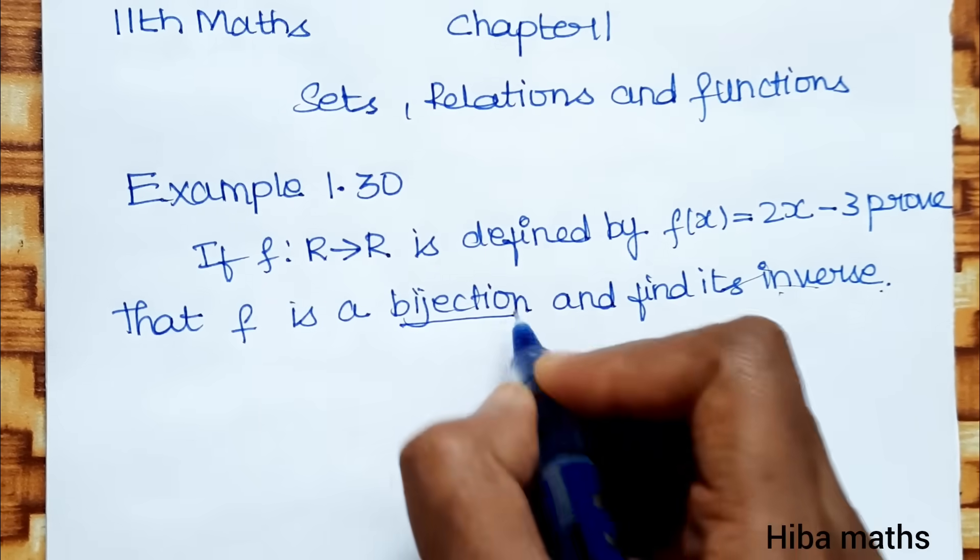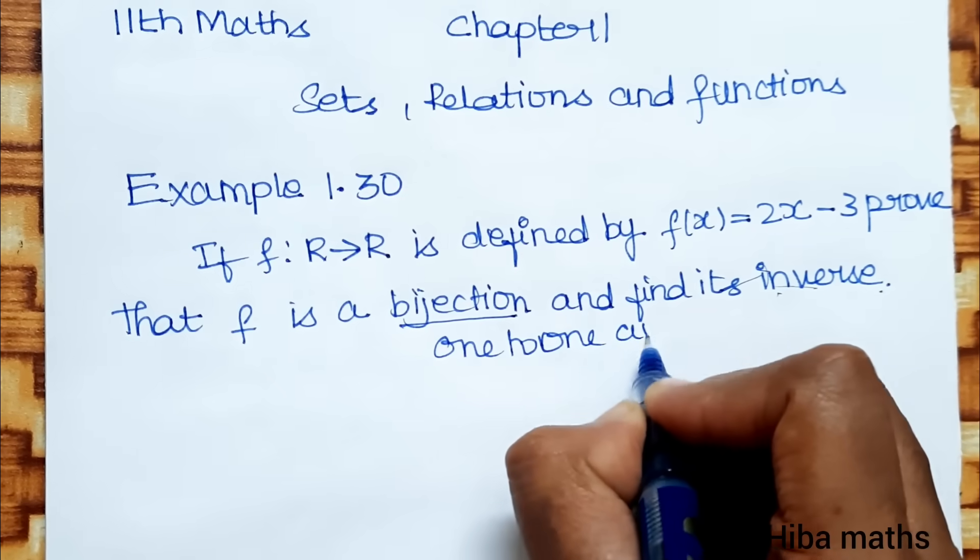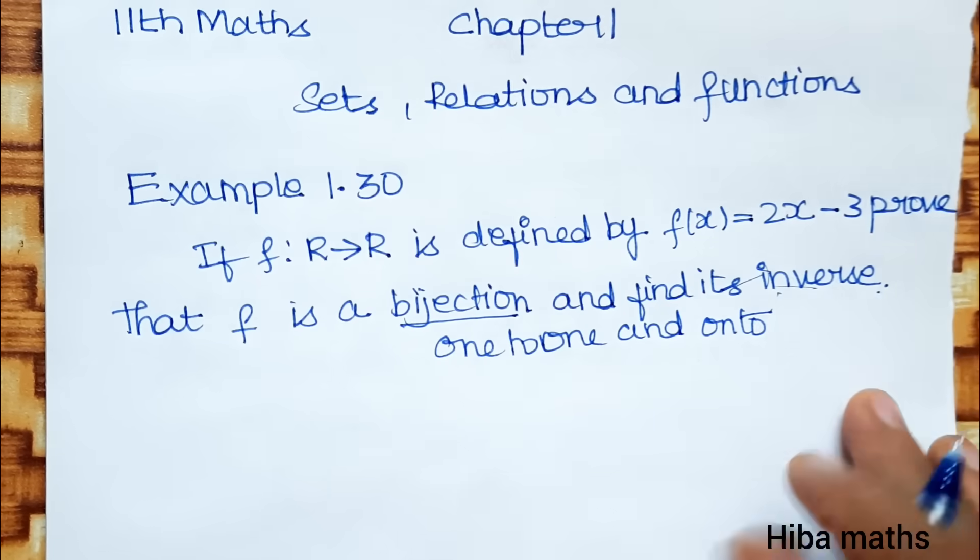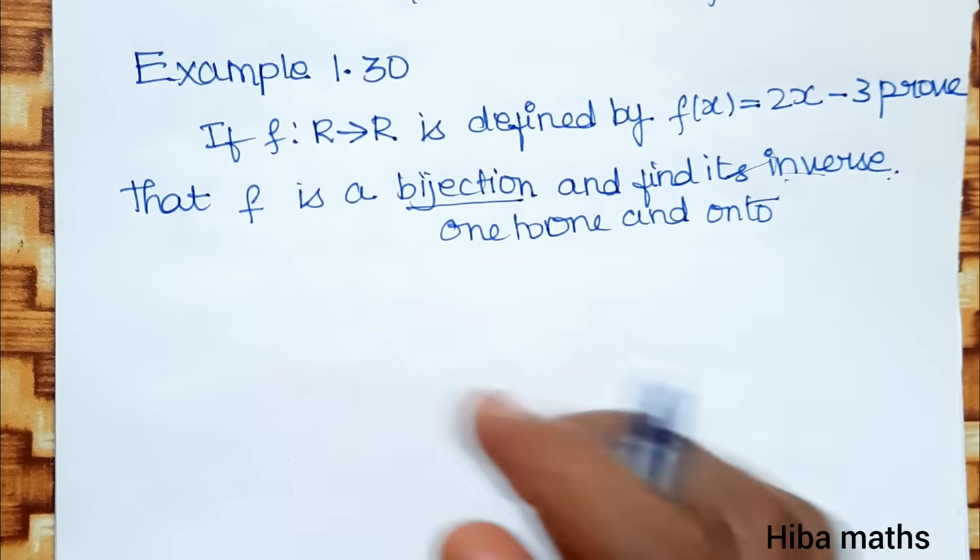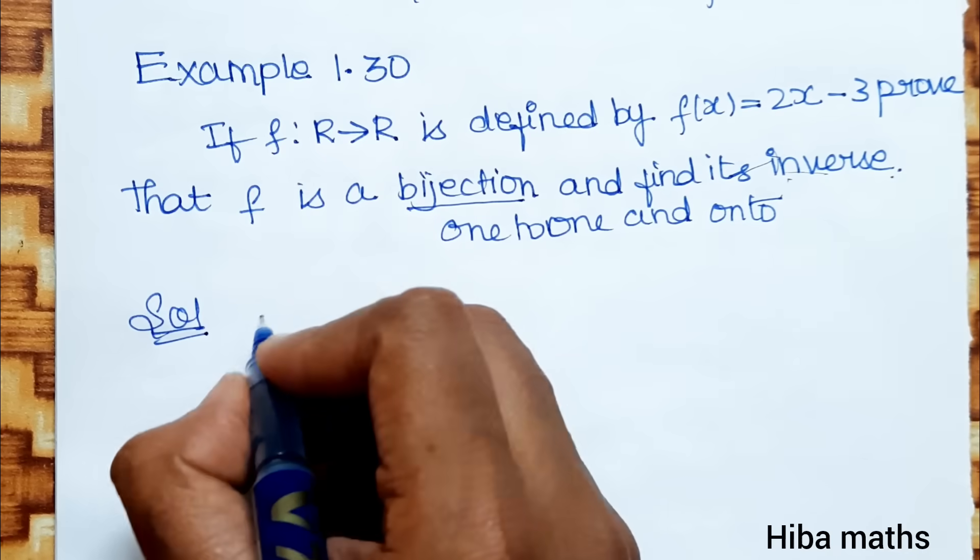So, bijection means we need to prove it is one-to-one and onto. One-to-one and onto together is bijection, and then we find the inverse. First we prove one-to-one. The first method is very easy.